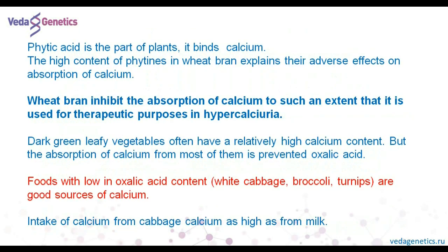Phytic acid is a part of plants and it binds calcium. The high content of phytins in wheat bran explains the adverse effect on the absorption of calcium. Dark green leafy vegetables often have a relatively high calcium content, but the absorption of calcium can be prevented by oxalic acid in some plants. Products with a low content of oxalic acid, such as cabbage and broccoli, are good sources of calcium.